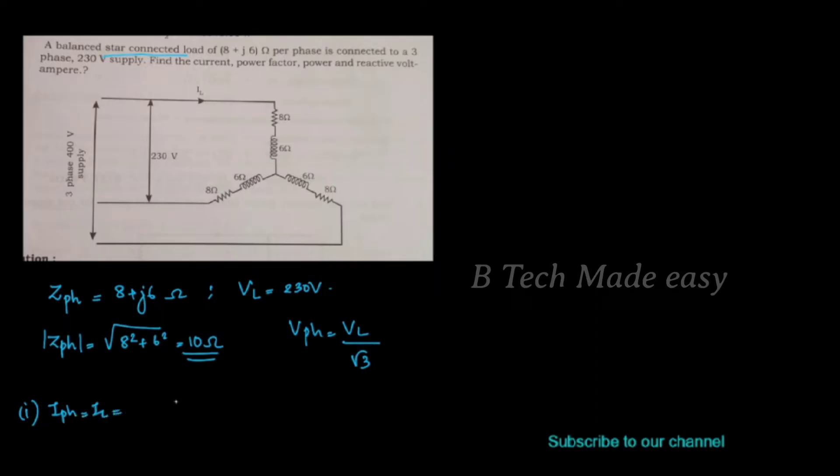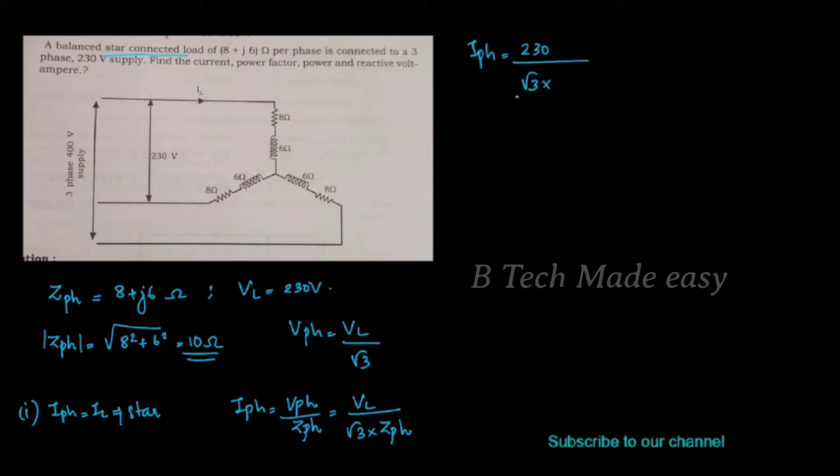The first question is to find the current. In a star-connected system, Vph is equal to VL divided by root 3. Therefore, Iph is equal to Vph divided by Zph, which gives Iph equal to VL divided by root 3 into Zph. Substituting, Iph equals 230 divided by root 3 into 10, giving approximately 13.279 amperes.